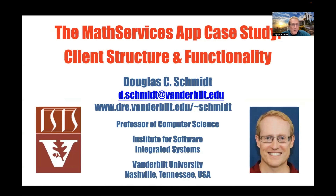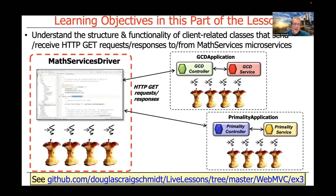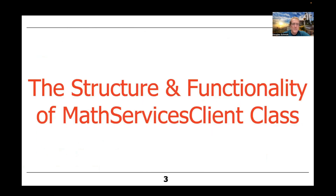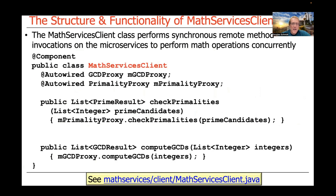Now that we've talked about the microservices, let's focus on the client. The client is actually a little different from previous clients we've seen before, because it has to handle two different microservices. We define something called the MathServicesClient class, which has a couple of methods that perform synchronous remote method invocations on the GCD and primality microservices. When used with the driver program, these calls are actually done concurrently.